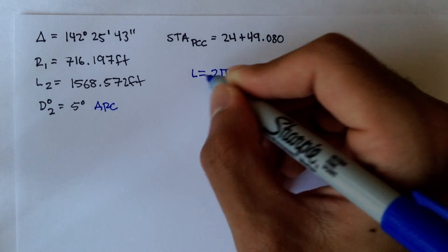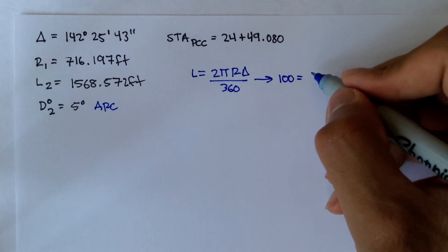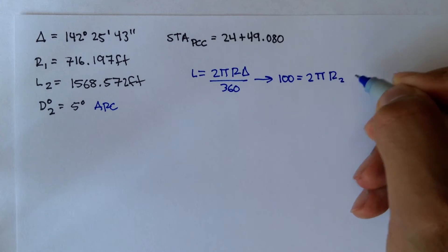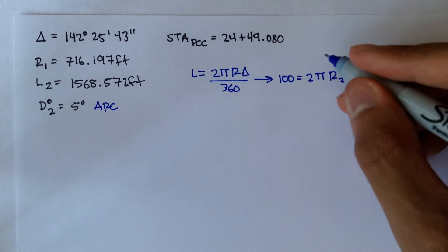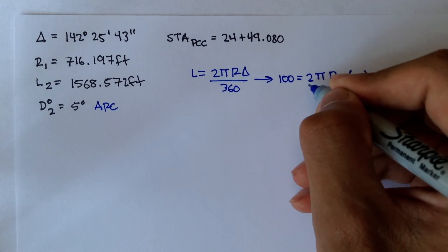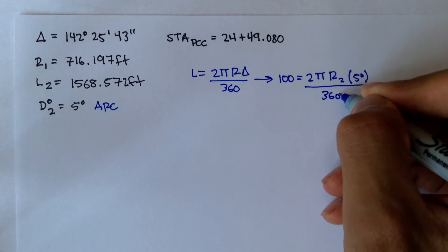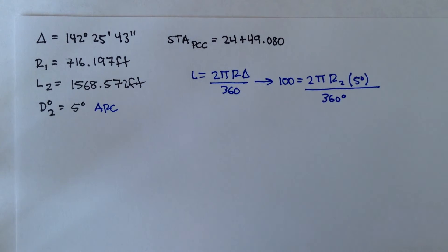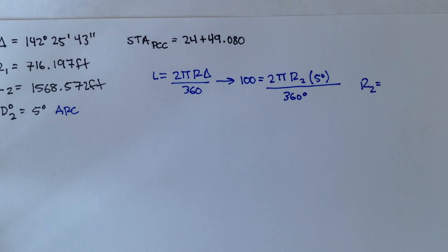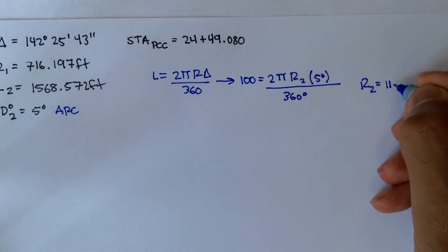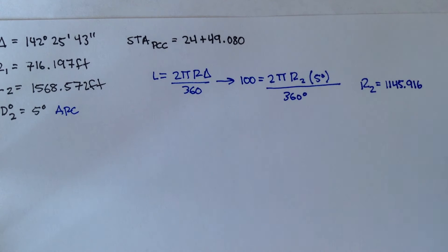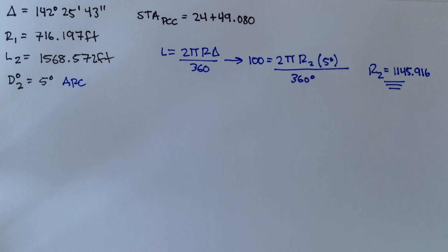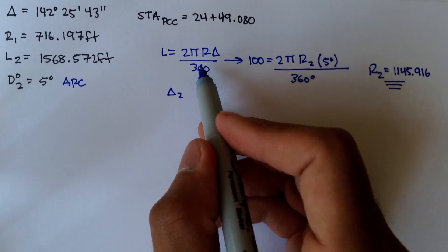And this formula actually turns into L is equal to 100 for degrees of curvature. So 2 pi r2, and the interior angle turns into the degree of curvature, which in this case is 5 degrees. And that's over 360 degrees. And if we plug this in and we solve for r2, r2 is equal to 1145.916. And we can use this radius to figure out what delta 2 is.